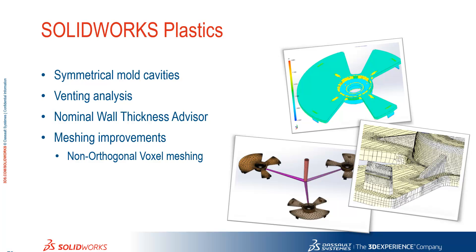In SOLIDWORKS Plastics, if you've got symmetrical mould cavities you can use a symmetry function within the solver to speed up the analysis. You've also got venting analysis, wall thickness advisor, and mesh improvements. We now offer a non-orthogonal voxel mesh, which is a square mesh.